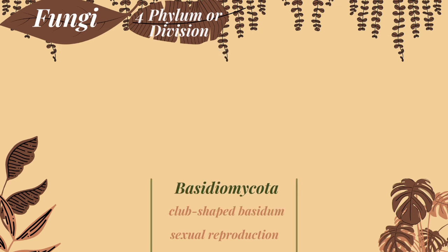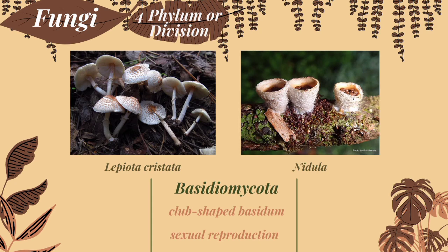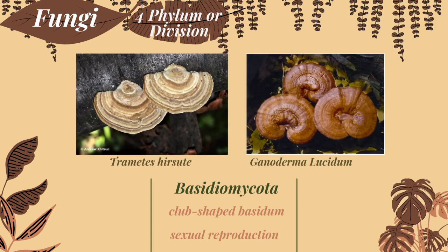Division Basidiomycota includes mushrooms, shelf fungi, and puffballs. Basidiomycota produces a club-shaped basidium, which represents a short diploid stage in the life cycle. In Basidiomycota reproduction, meiosis occurs in cells at the tip of the hyphae, which extend underground from the reproductive structure and may be produced at the perimeter of the underground mycelium. Examples in this division are Lepiota cristata, Nidula, Trametes hirsuta, and Ganoderma lucidum.